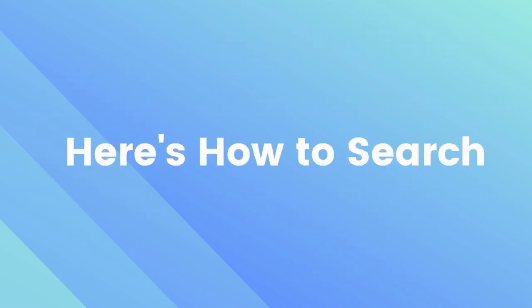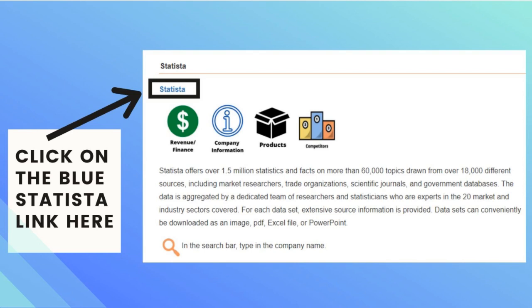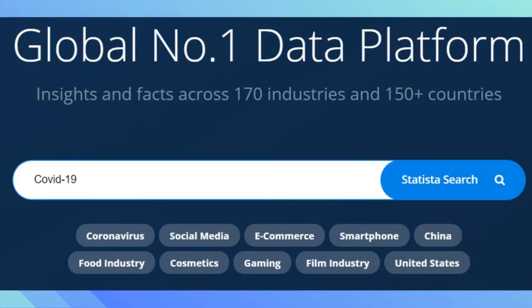Here is how to search in Statista. Click on the blue Statista link and it will take you to the home page. In the search bar, type in a keyword. For this example, we will use COVID-19. Press the magnifying glass when you're ready to search.